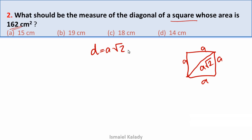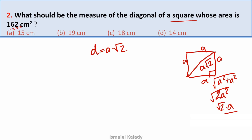We write the diagonal equation as a√2. If we take the right angle — it is 90 degrees — this is a hypotenuse. So a² plus a² gives us 2a², and the root of 2a² is √2 into a. That is the diagonal length: the diagonal equals a√2.